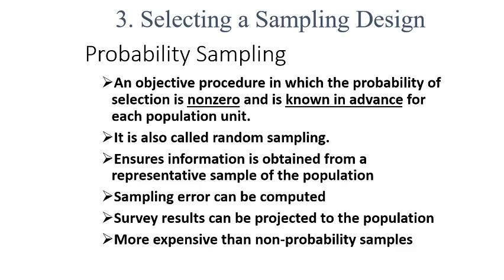When you collect data, there is a chance of sampling error — you may have missed some population units from your representative group. Within probability sampling there is a chance to compute that error, while in non-probability sampling there is no way of calculating the sampling error.